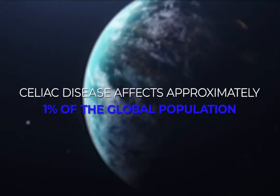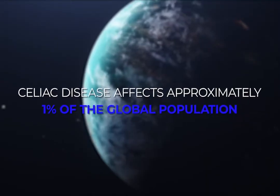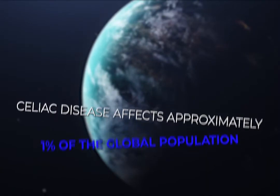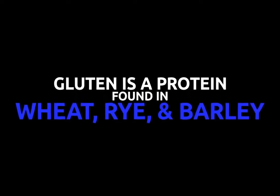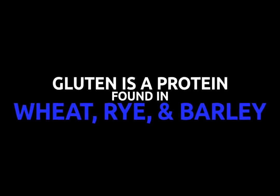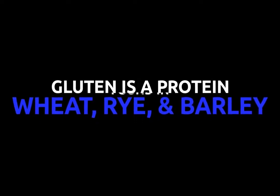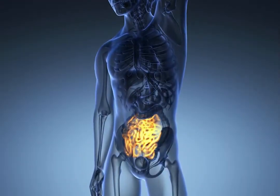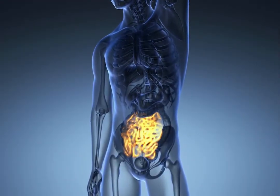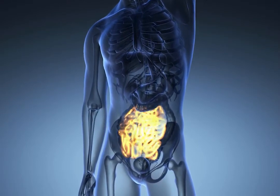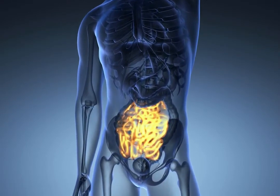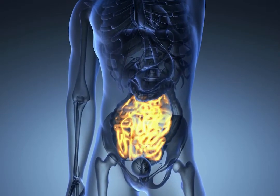Celiac Disease is a chronic immune condition which affects approximately 1% of the global population. When patients with Celiac Disease eat gluten, which is a protein found in wheat, rye, and barley, their immune system is stimulated, which leads to inflammation and damage to the villi in the small intestine.